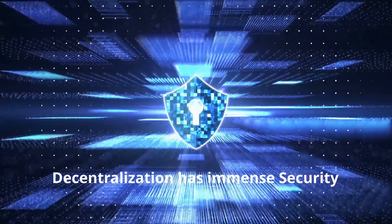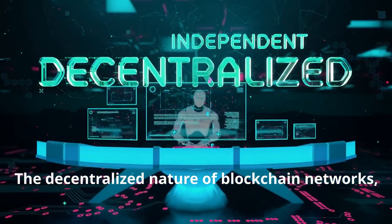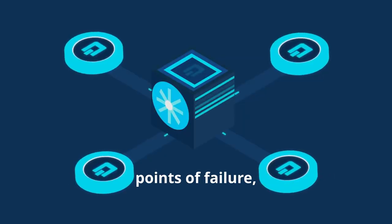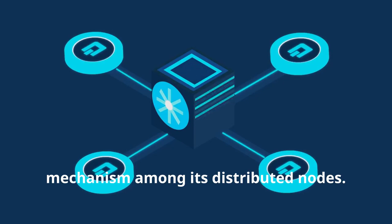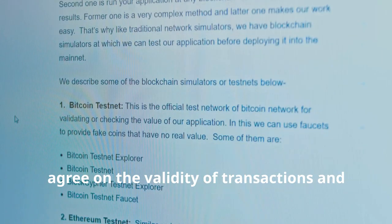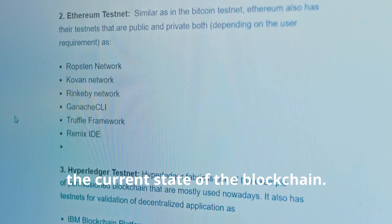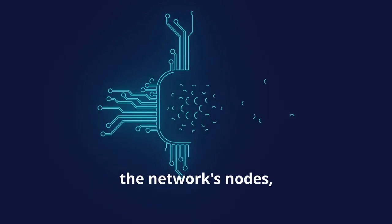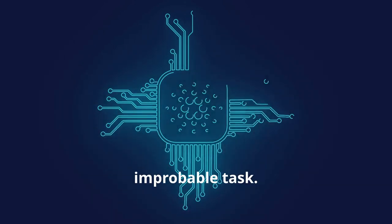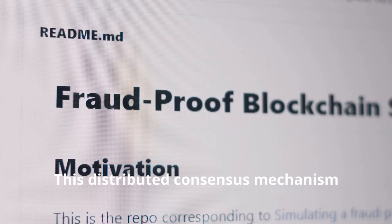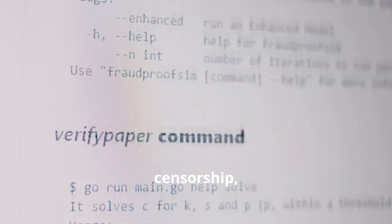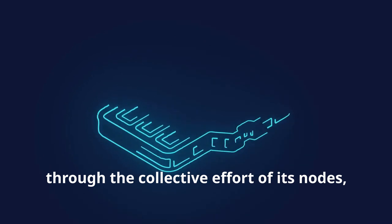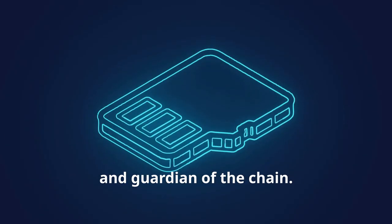The decentralized nature of blockchain networks, powered by nodes, is crucial for their security. Unlike centralized systems with single points of failure, blockchain relies on a consensus mechanism among its distributed nodes. This consensus ensures that all nodes agree on the validity of transactions and the current state of the blockchain. If a malicious actor attempts to alter the blockchain, they would need to control a majority of the network's nodes — a computationally expensive and improbable task. This distributed consensus mechanism makes blockchain incredibly resistant to attacks, censorship, and data manipulation.